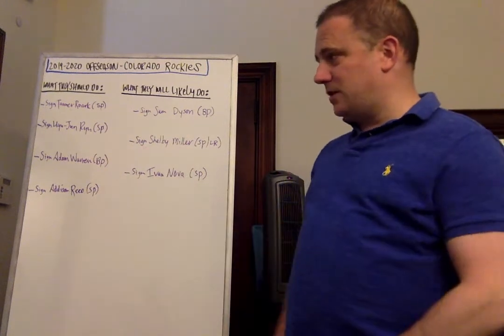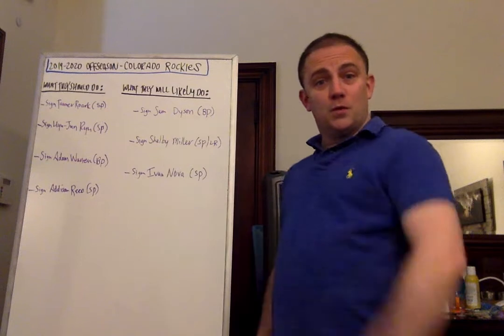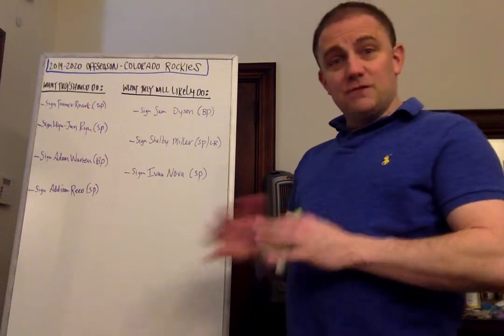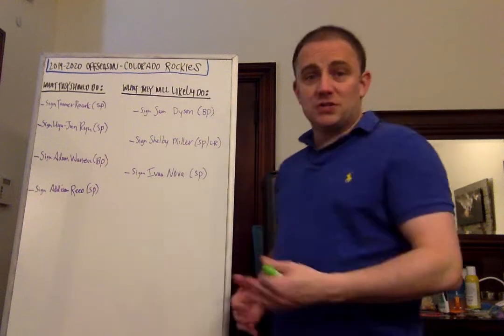So I think they should add two starters and two relievers to kind of give not only depth to the rotation with starters, but protection for the rotation with relievers who can go more than one inning. Adam Warren can be a spot starter, he can be a long reliever. So you have somebody who might be able to go out and throw two, three, four innings. So it gives you versatility there. So that's what I think they should do.